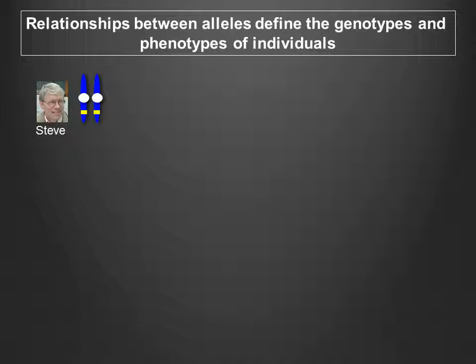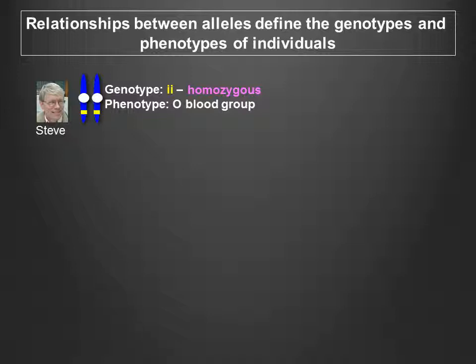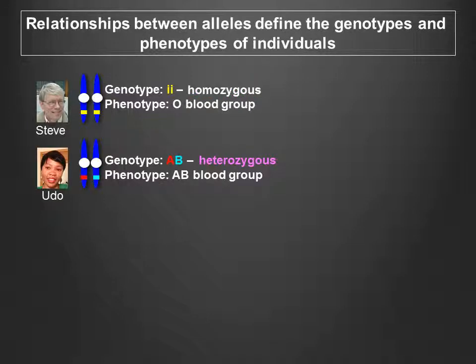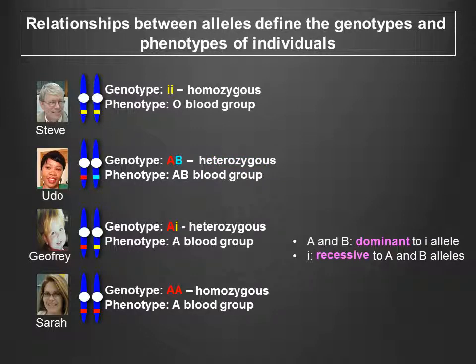Humans, like the fruit flies you will be working with, are diploid organisms, meaning that each individual has two copies of each chromosome. Individuals like myself who carry two copies of the same allele are said to be homozygous for the ABO gene. Individuals like Udo who carry two different alleles are heterozygous. Notice that although a gene can have multiple alleles, any one normal individual can only have two alleles of the gene.